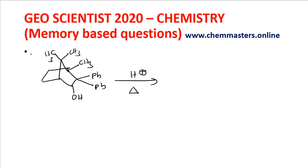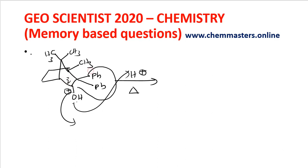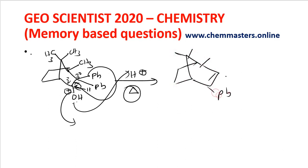Next question: look at the given substrate with acid-induced rearrangement. The lone pair of electrons on the oxygen of the hydroxyl group attacks H+, which cleaves it, forming a secondary carbocation. A phenyl group migrates to form a more stable tertiary carbocation. On further heating, hydrogen cleaves to form a double bond. The product you will get is Ph-C=C-Ph, and that is your answer — you can see this option in the examination.